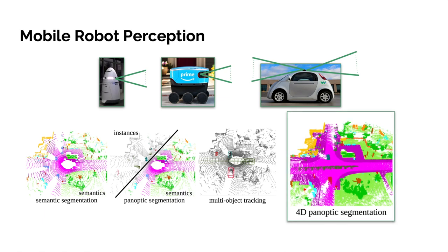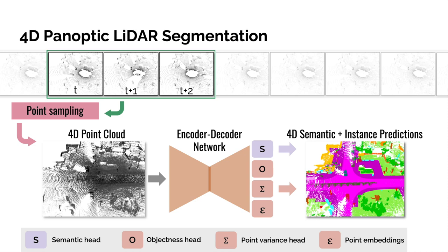For this task, we need to assign a semantic meaning to every 3D point in a sequence, and a unique object identity consistently in space and time. We propose a method that jointly tackles semantic and instance segmentation in the spatial and temporal domain.